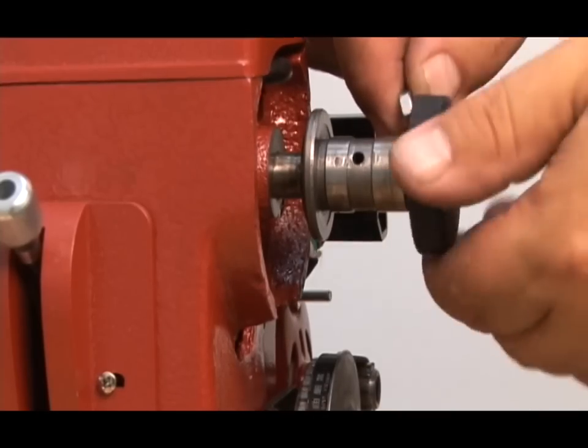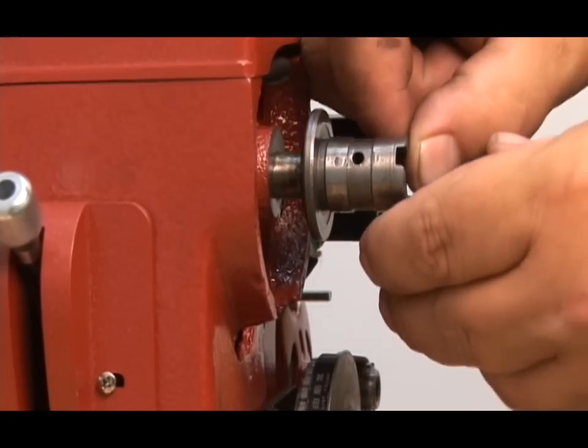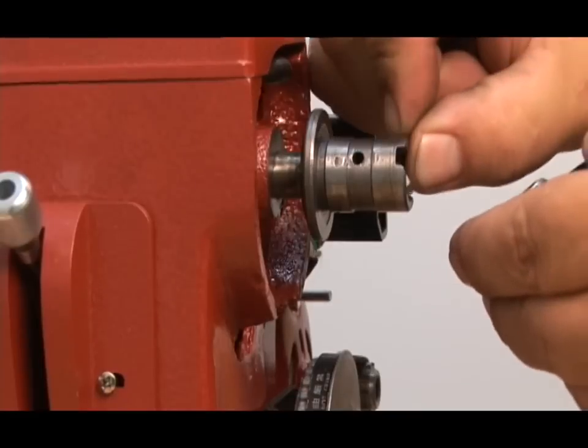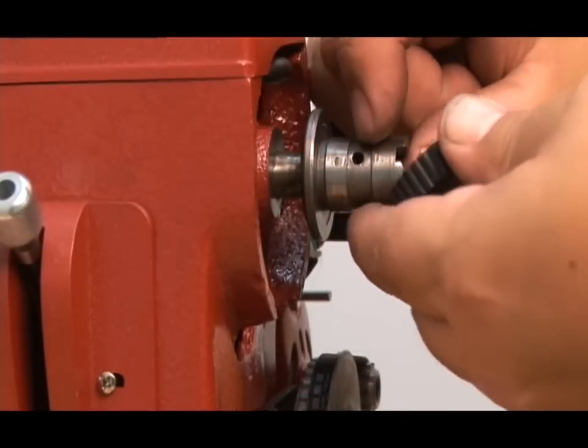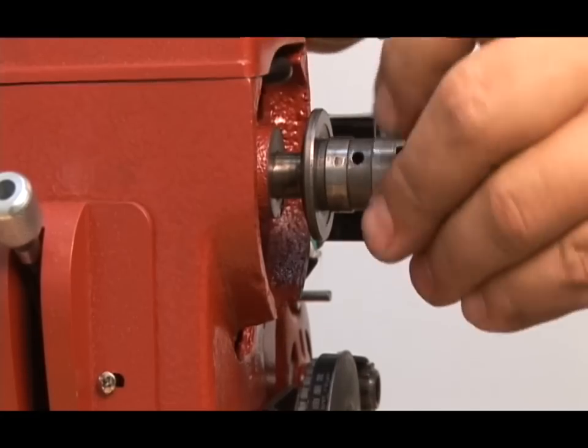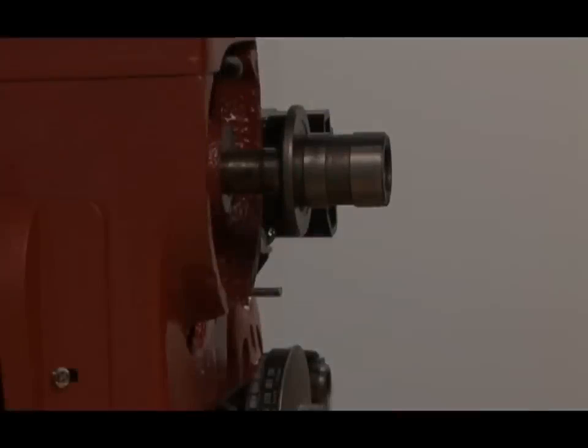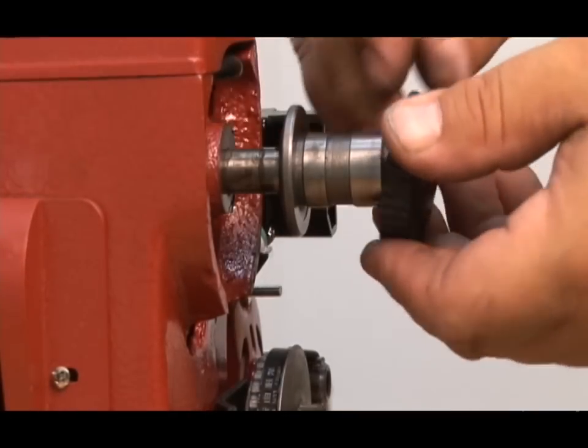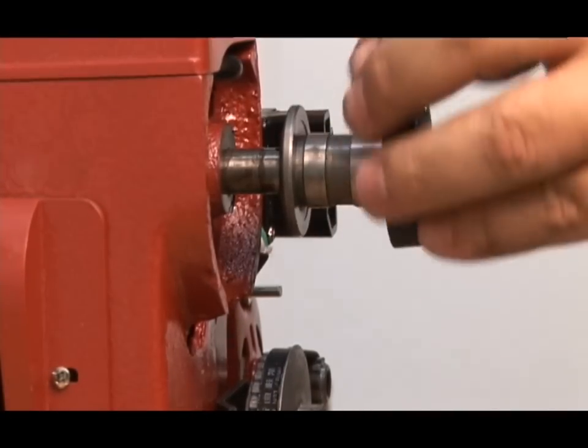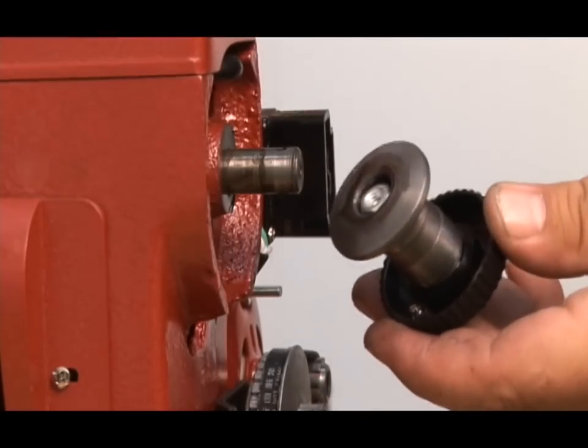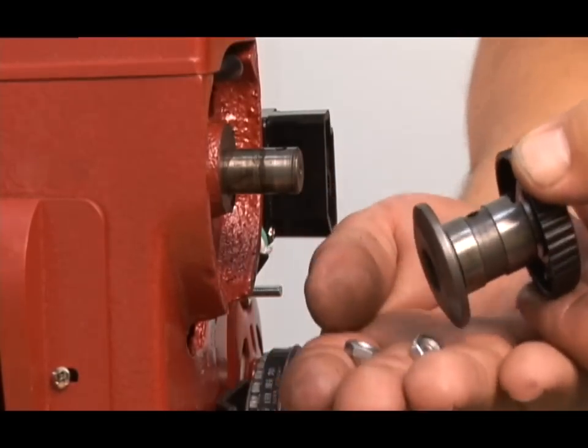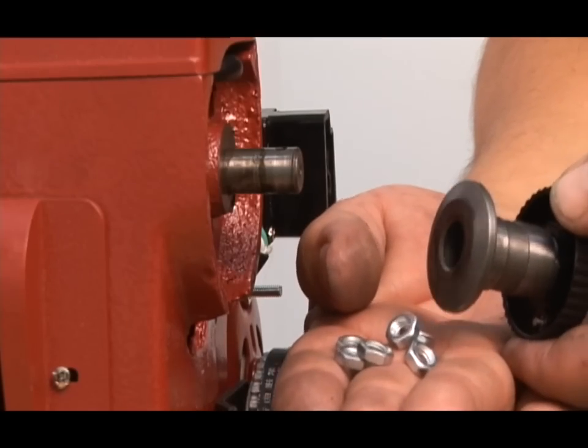Put another nut in there. They sometimes fall out, so take care that they're all stacked on top of each other. Almost off. There it is, falling off. We have six nuts in there total and the bushing came off.